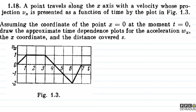And the question says: a point travels along the x-axis with a velocity whose projection vx is presented as a function of time by the plot in figure 1.3. Assuming the coordinate of the point x equal to 0 at the moment t equal to 0, draw the approximate time-dependence plots for the acceleration wx, the x-coordinate, and the distance s covered.